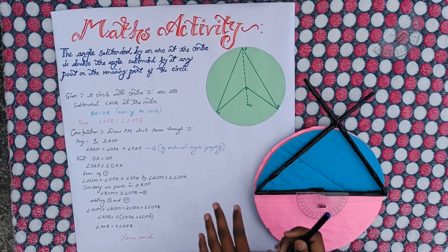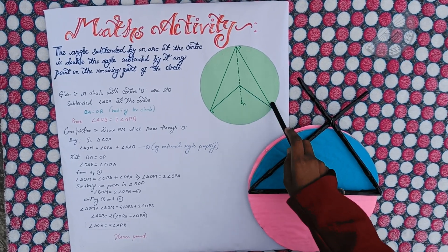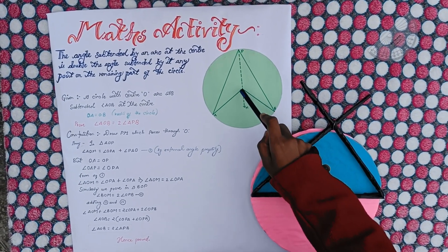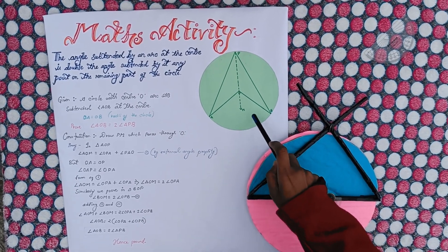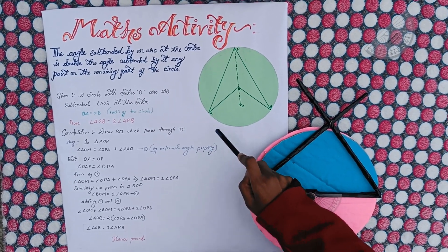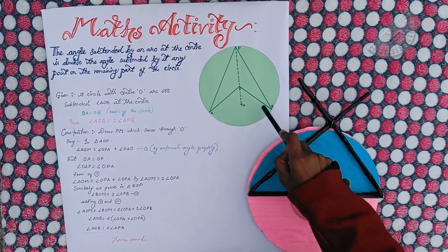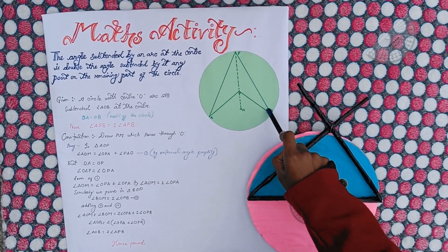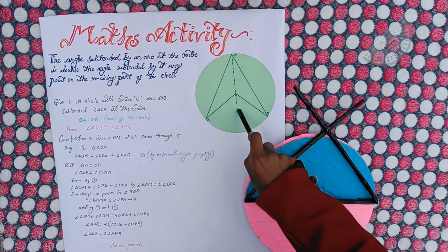Here given a circle with center O and arc AB subtended an angle A-O-B at the center where O-A is equal to O-B as these are the radii of the circle, and we have to prove that angle A-O-B is twice of the angle A-P-B. Firstly we construct a line PM which passes through center O.